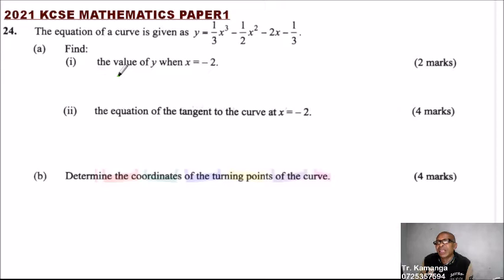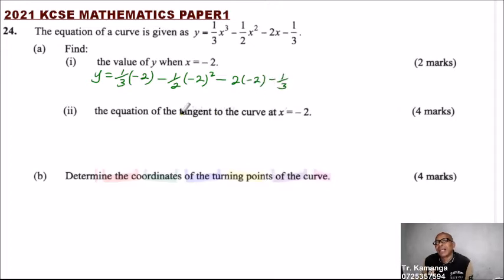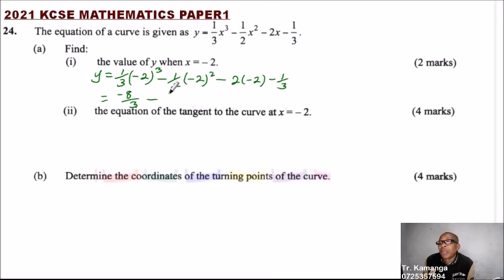So what you do here is you just substitute minus 2 in place of x in our equation. So you say y equals one-third, and instead of x cubed you substitute minus 2, then minus one-half multiplied by minus 2 squared, minus 2 multiplied by minus 2. Minus 2 cubed is minus 8, divide by 3. Then minus 2 squared is 4, and 4 times one-half is 2.